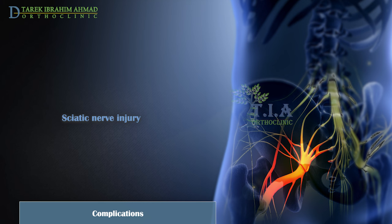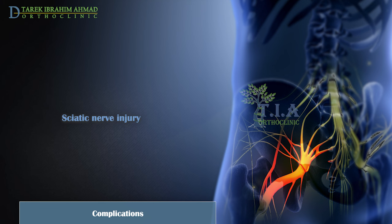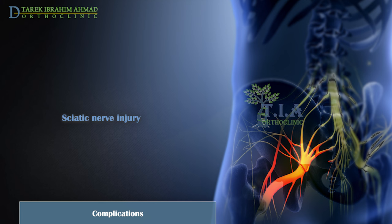Complications: Sciatic nerve injury. This nerve extends from the lower back down the back of the legs. It can be stretched and damaged in a posterior hip dislocation, causing weakness in the lower leg and affecting the ability to move the knee, ankle, and foot normally. Sciatic nerve injury occurs in approximately 10 percent of hip dislocation patients, and the majority of these patients will experience some nerve recovery.